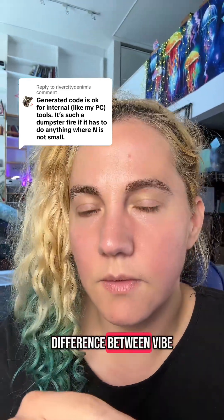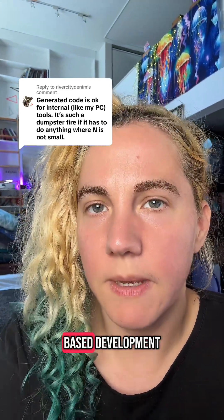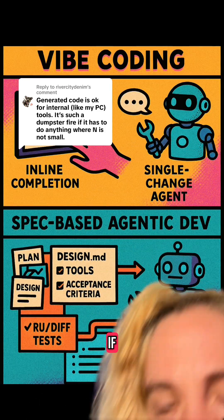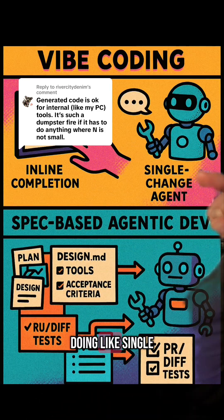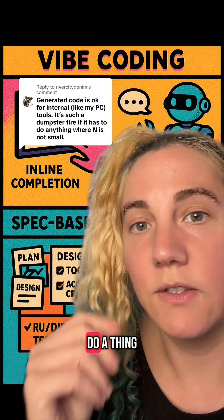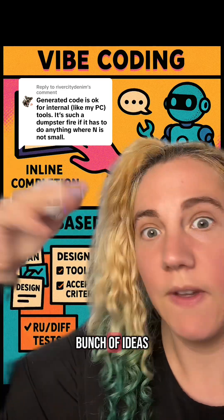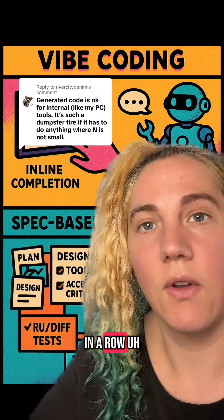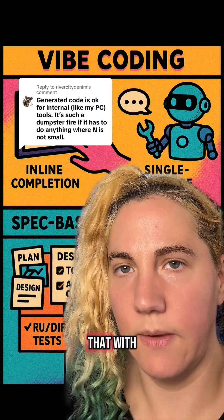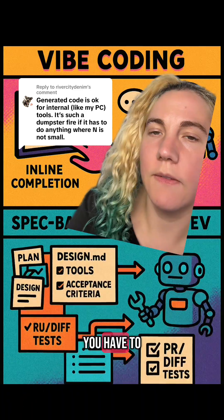I think this is the difference between vibe coding and spec-based development. I made a zine about it. If you're just doing a single change or you're just telling the agent to do a thing and then you're just having a bunch of ideas in a row, it's gonna be bad. Just like if you did that with writing code without AI.